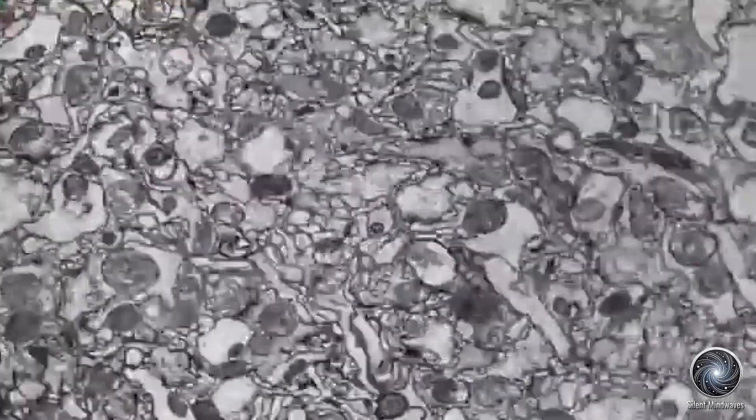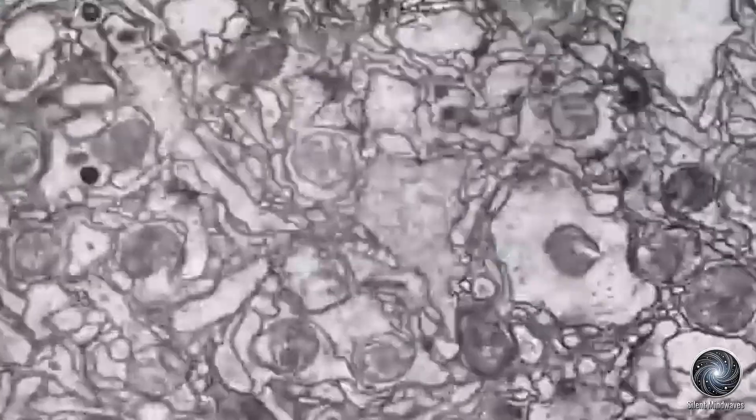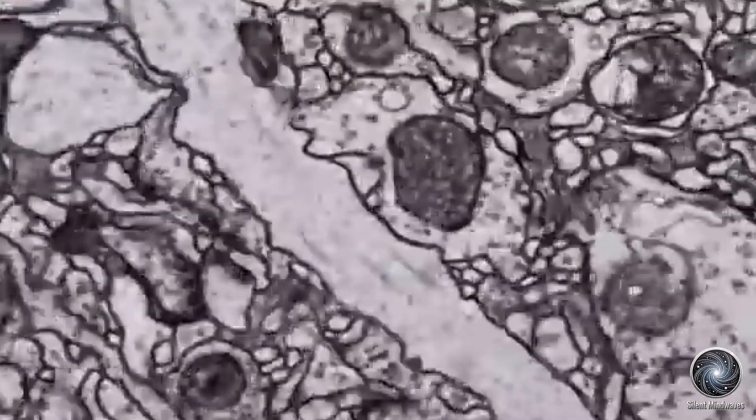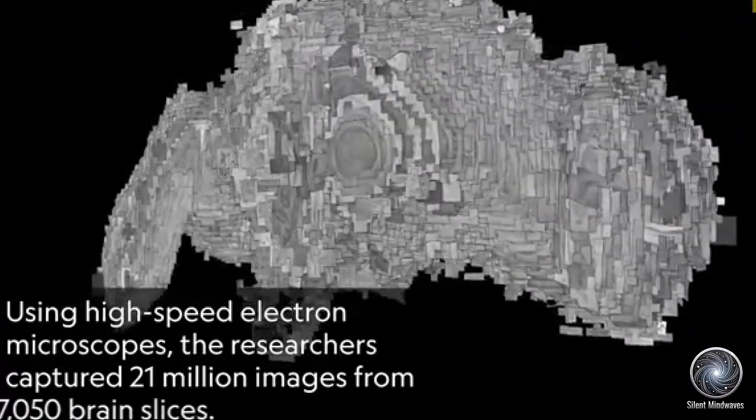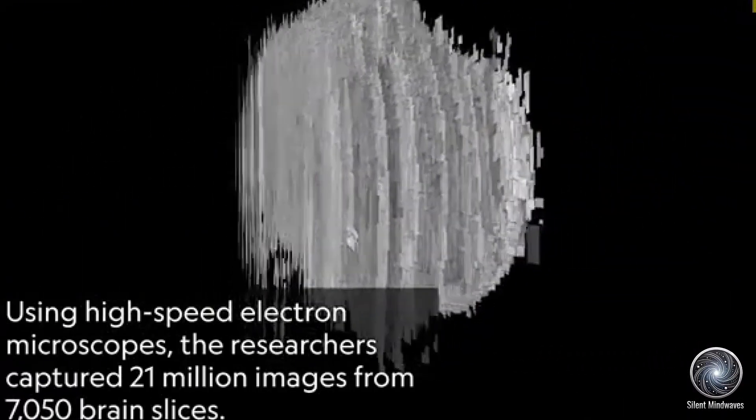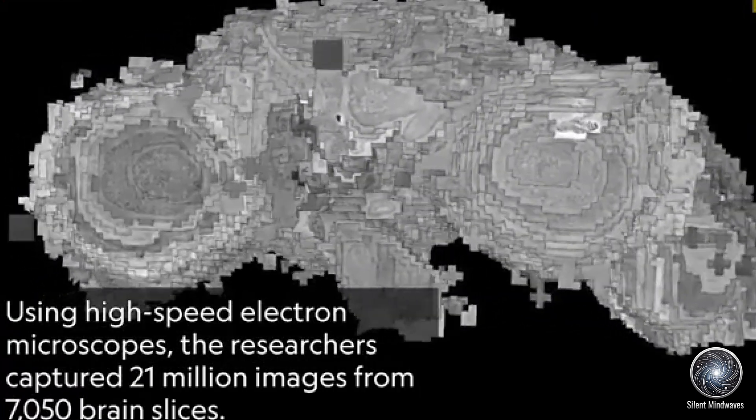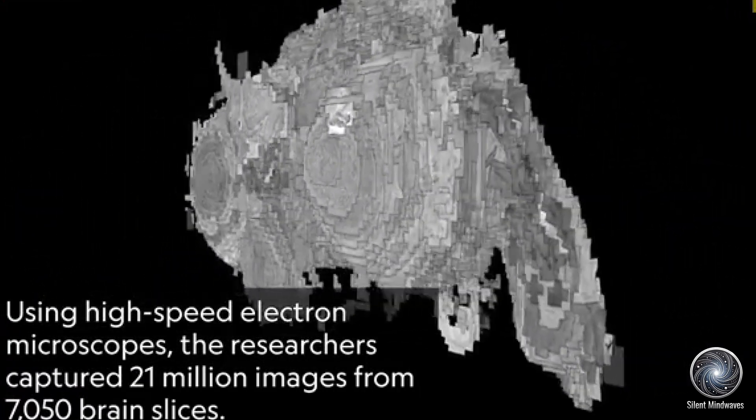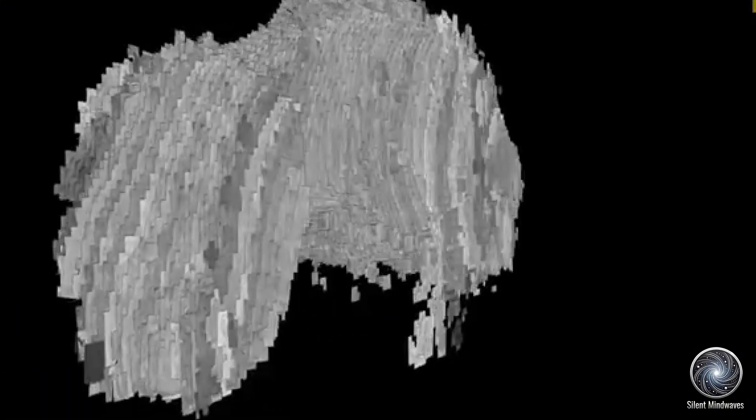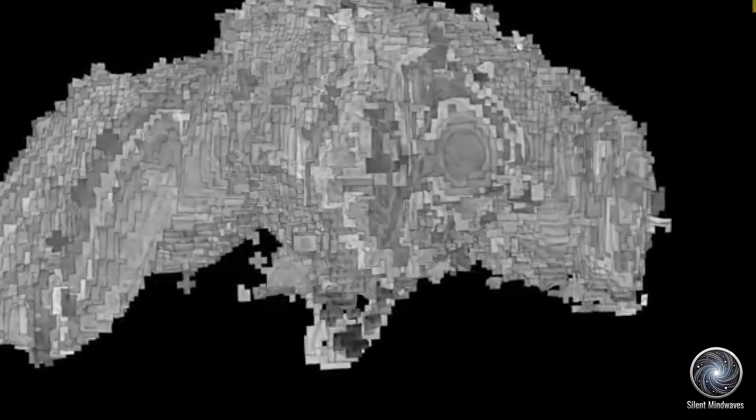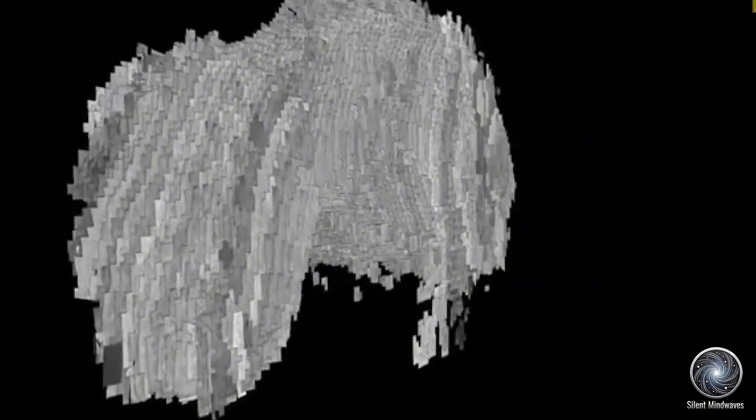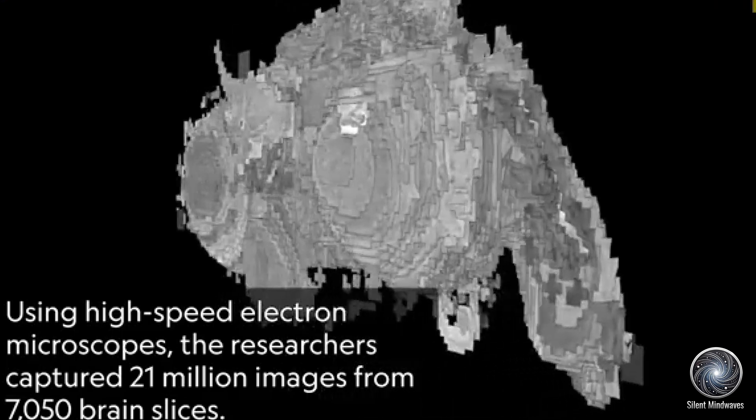By 2018, the team used advanced electron microscopy to slice the brain into 7,050 ultra-thin sections, capturing over 21 million high-resolution images. These images revealed an unprecedented level of detail in the fruit fly's neural network, which contains about 140,000 neurons and over 54.5 million synaptic connections.